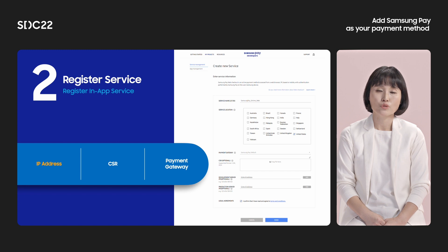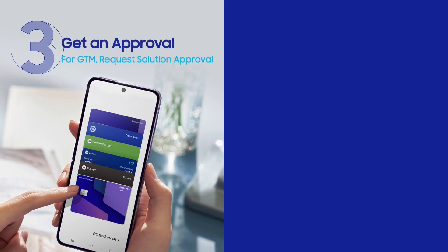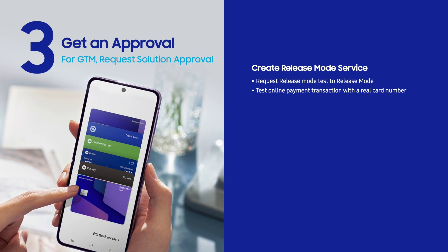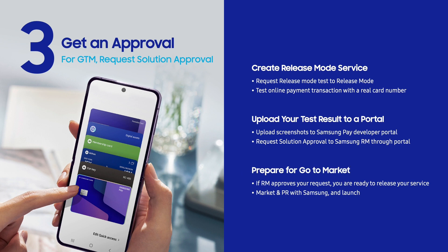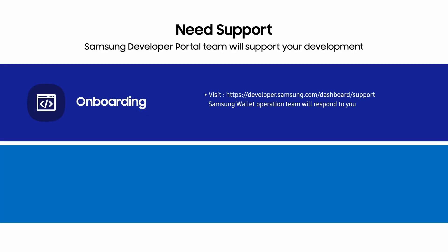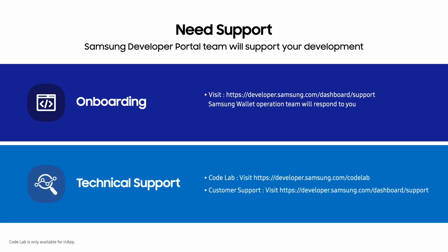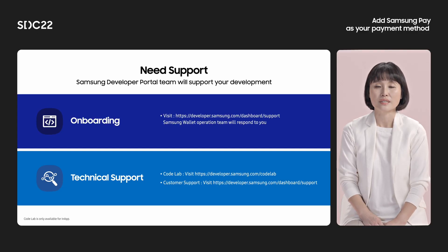If you complete the onboarding process, you can start development. This presentation does not explain the development process in detail — if you want to know more, please visit the code lab on the Samsung Developer Portal. If SDK integration and payment processing are successful on your side, it's time to go to market. Upload your test results with images and videos showing your successful transaction, then request approval in the portal. Finally, if the Samsung Operator approves your request, you can release your application in the market. If you need support, please visit the Samsung Developer Portal and leave your questions in customer support — the Samsung Operations Team will respond to you.